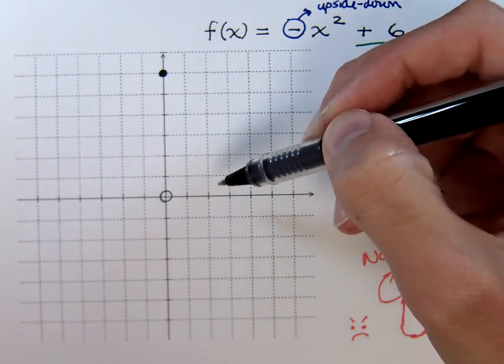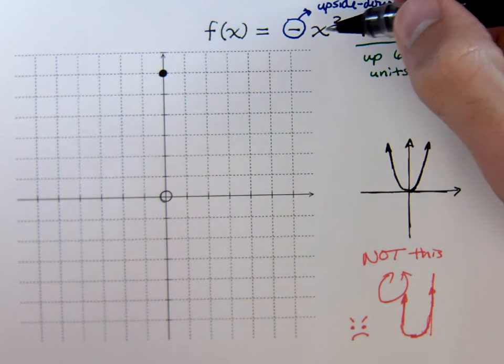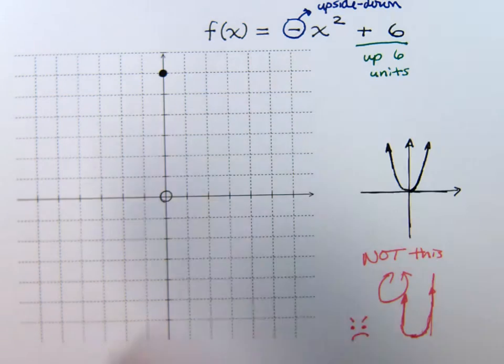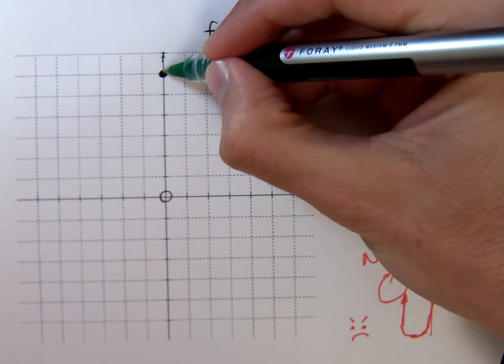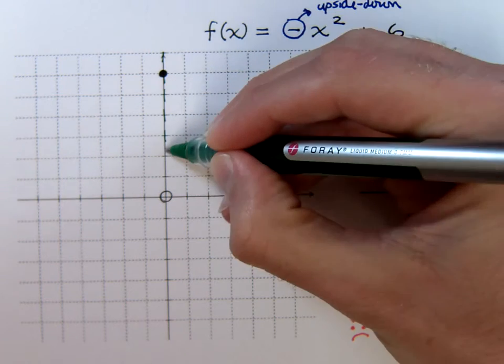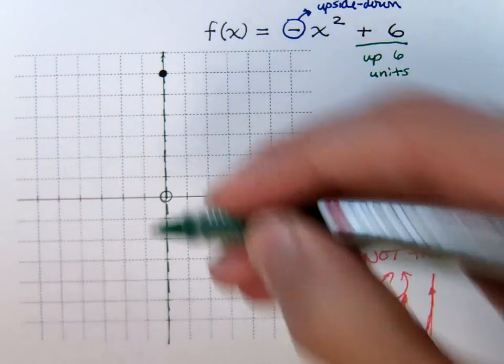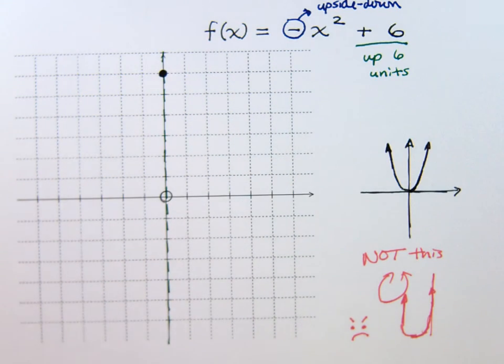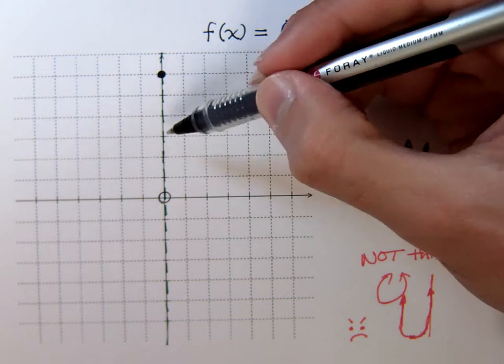But I want to make sure that we have nice, clear, accurate points. Since this is a parabola, it's a lot like the absolute value in that it's got this axis of symmetry running right through the vertex. So whatever I do on this side, I'm going to mirror that on the other side.